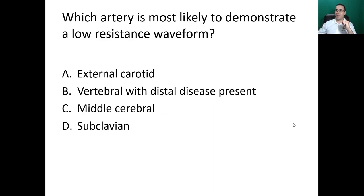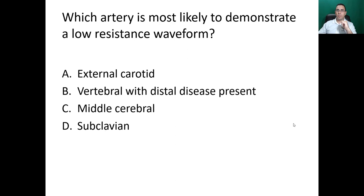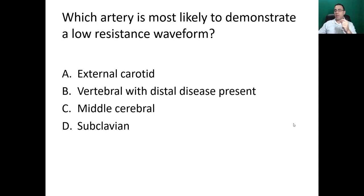Next question: which artery is most likely to demonstrate a low-resistance waveform? Low resistance means more flow, so this artery has to supply something constantly demanding blood. Options: external carotid, vertebral with distal disease present, middle cerebral, and subclavian. The answer is the middle cerebral artery — arteries in the circle of Willis give a low-resistance waveform.